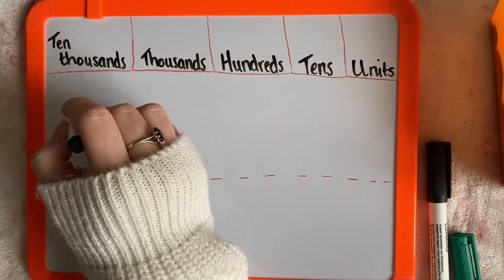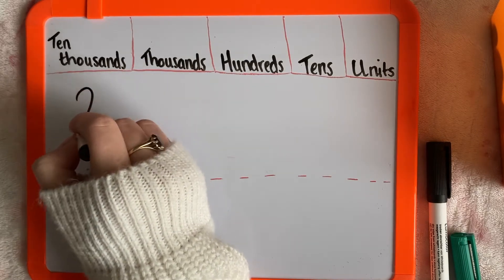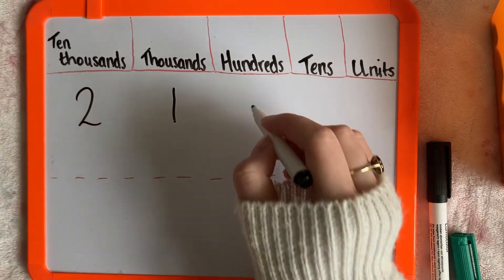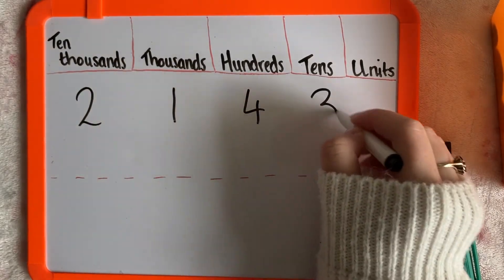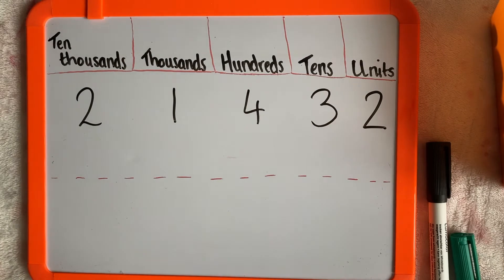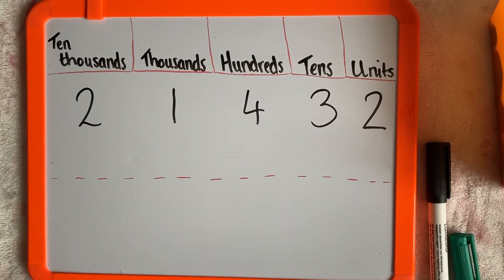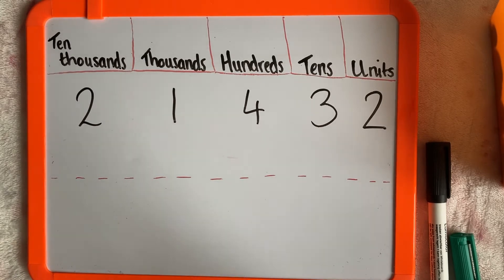If I put in the number 21,432. Take a moment, pause the video and see if you can work out the Place Value. Remember, if you need to look back on the last video when I discuss the terms in depth, that's absolutely fine. We're looking at the Place Value of each digit, so how much each number is worth.